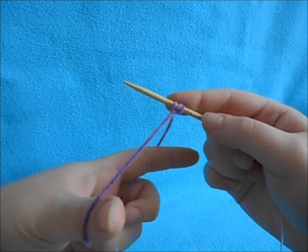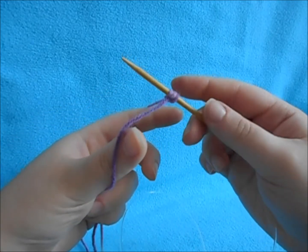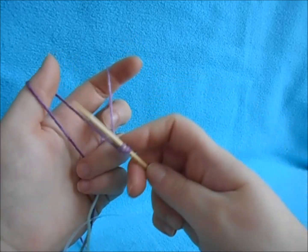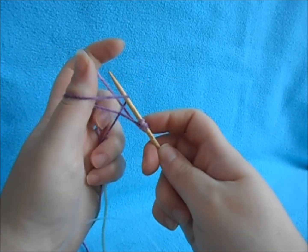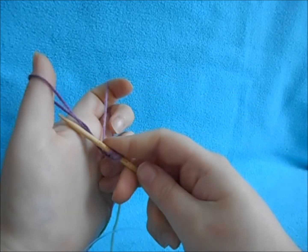And you want to make sure that you can move it on your needle with ease, but also it's not too loose. And you definitely don't want it too tight. So then you just repeat that process, and that is how you use the long tail cast on method.